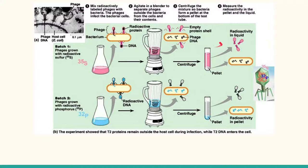When the samples were analyzed, they observed that the sulfur was only found within the viruses in the liquid. Meanwhile, the phosphorus was found in the pellet where the E. coli was located. This suggested that the viruses inserted DNA into the bacteria and left behind a protein shell.